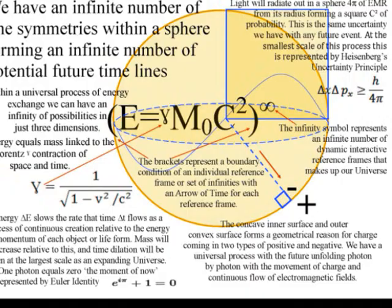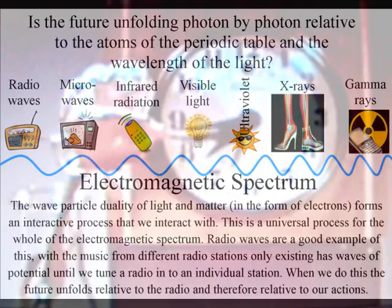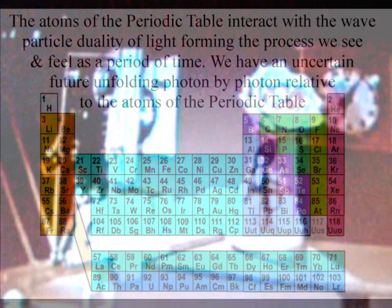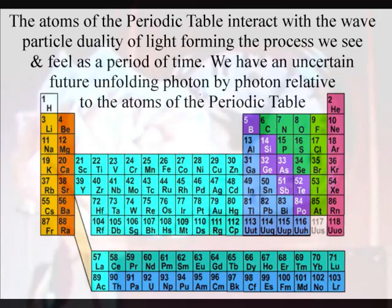This process is formed by the spontaneous absorption and emission of photon energy relative to the atoms of the periodic table. It is this process of energy exchange that forms the ever-changing world of our everyday life that we see and feel as a period of time.